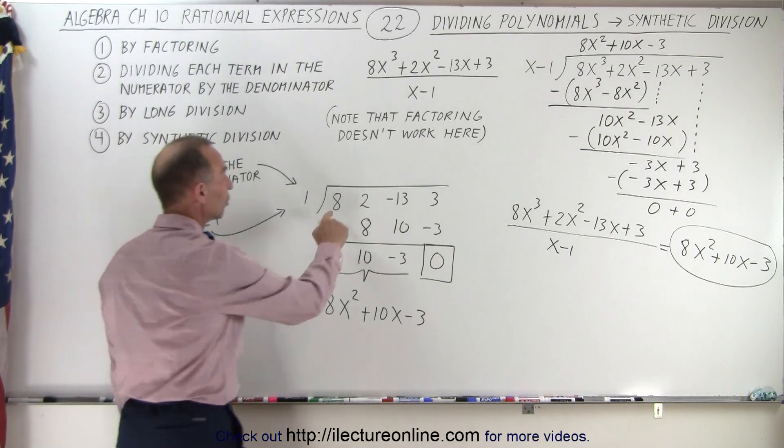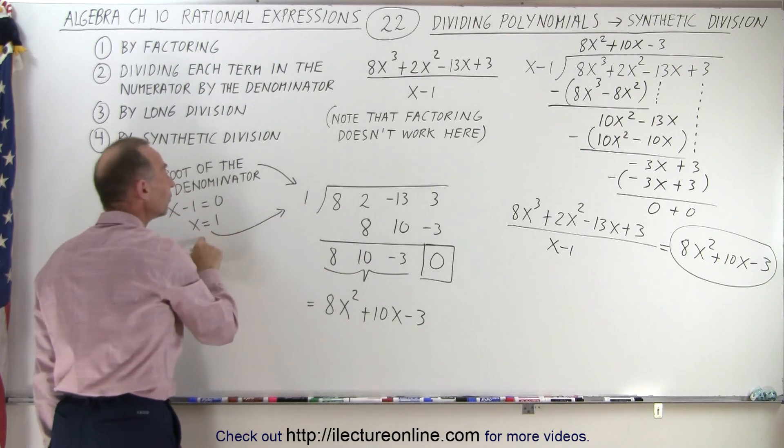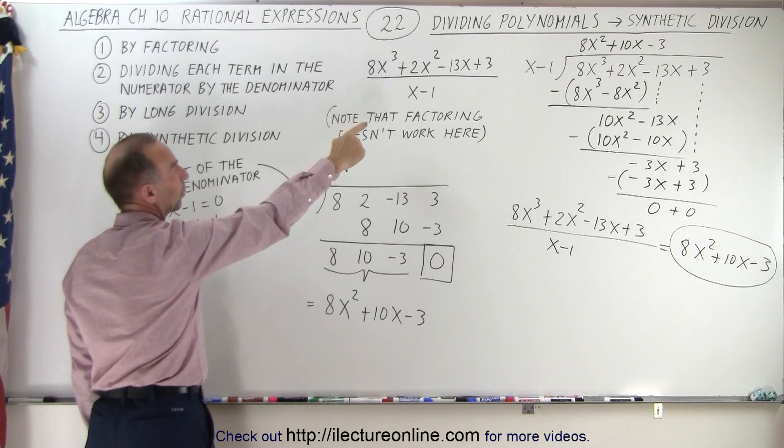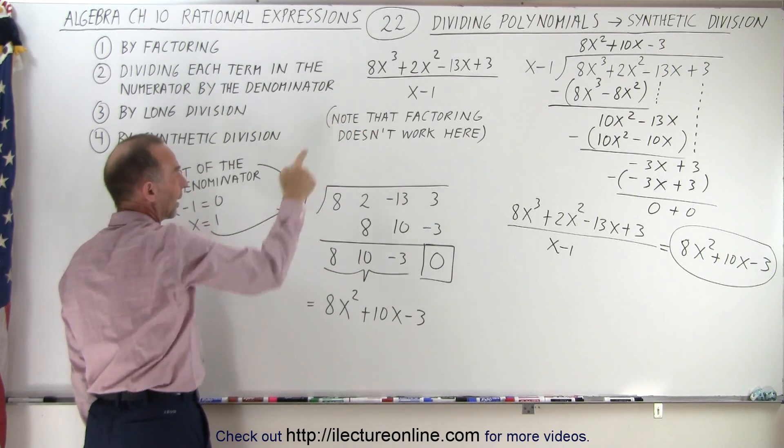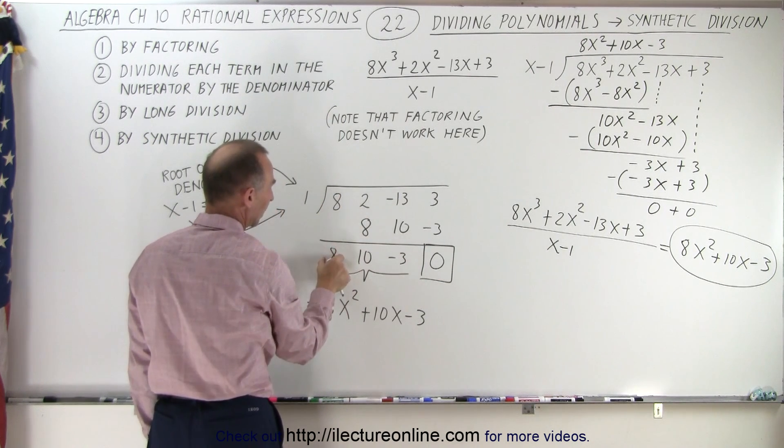Again, we take the numerical coefficients of the four terms, we put it here. Over here we put the root of the denominator, so we have x minus 1, set it equal to 0, solve for x, we get x equals 1. Then we put a line here, we drop the first number down,